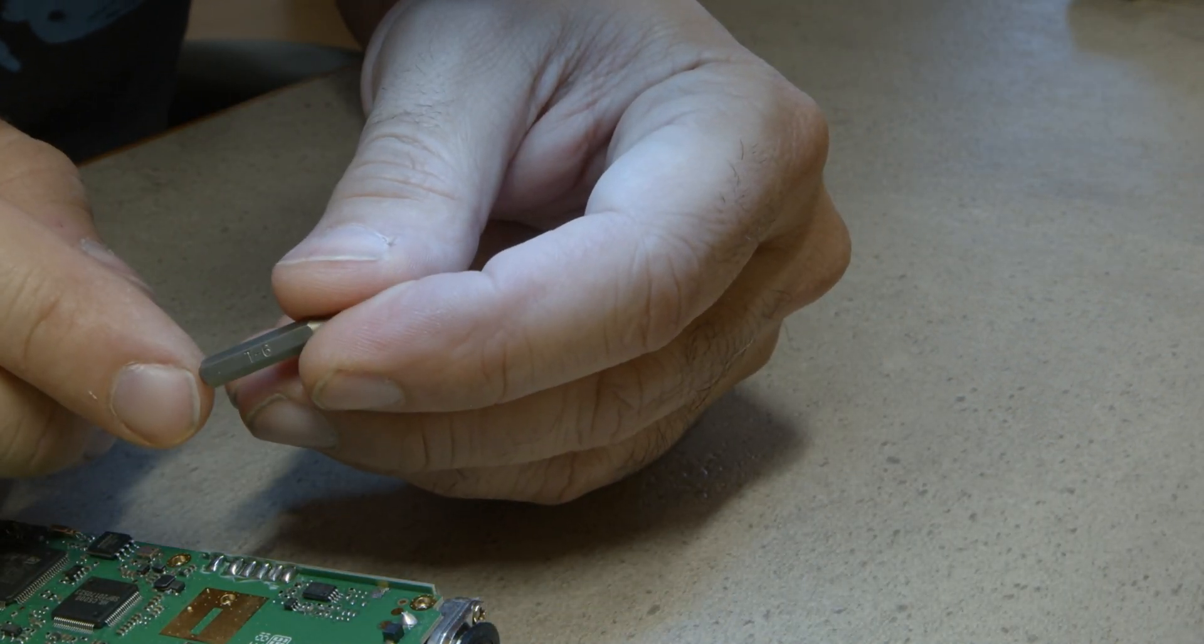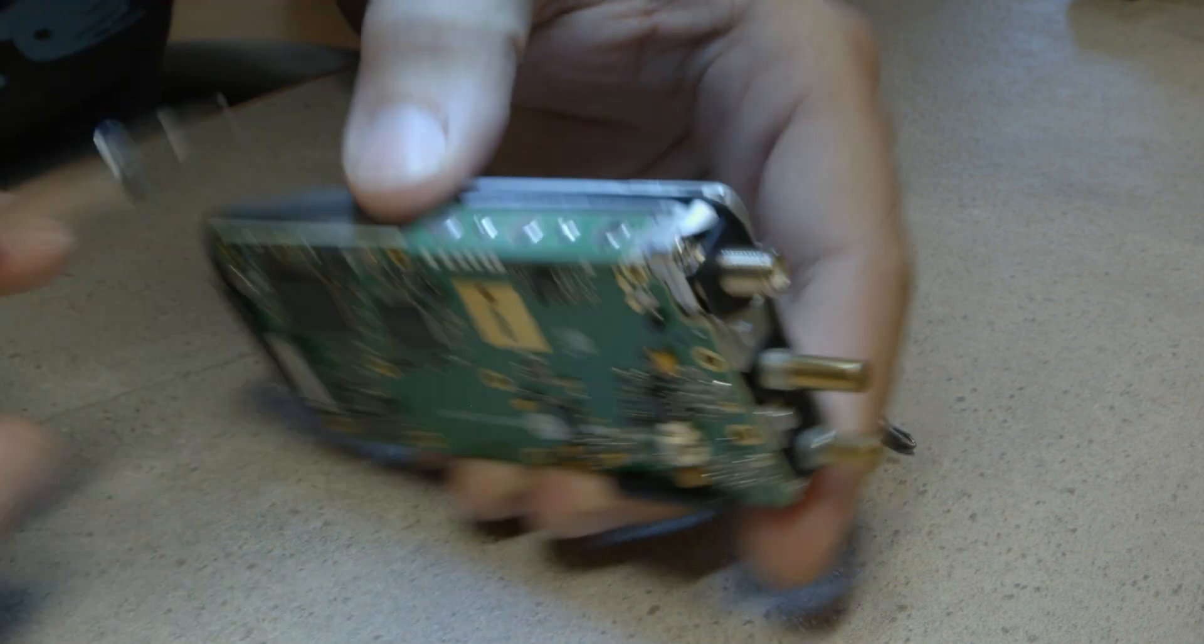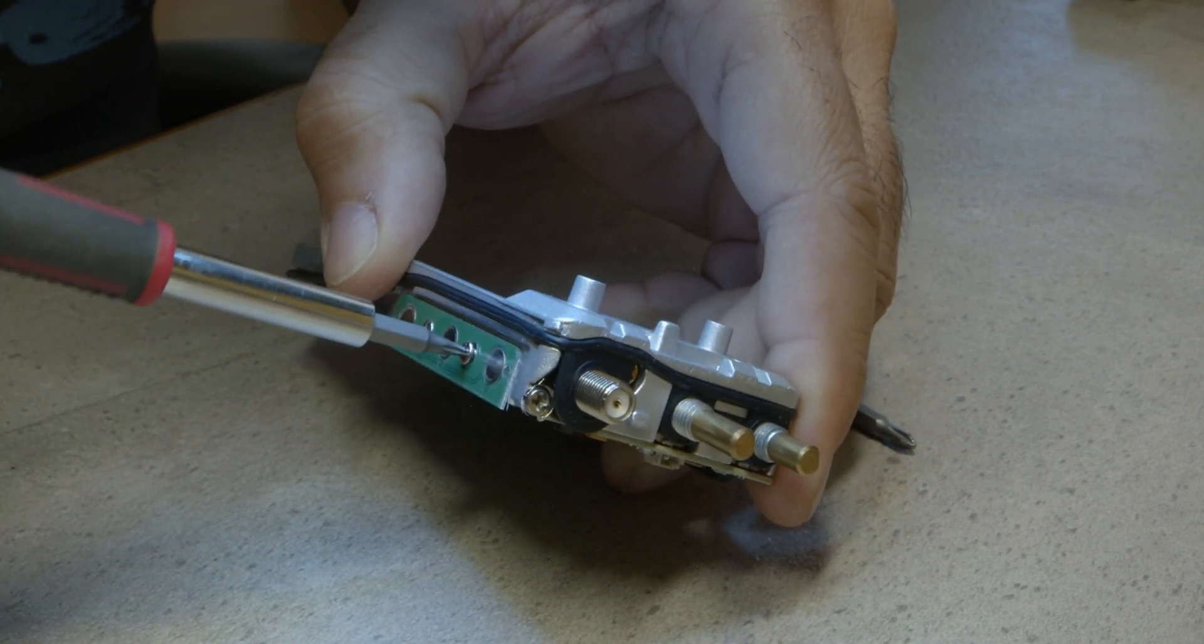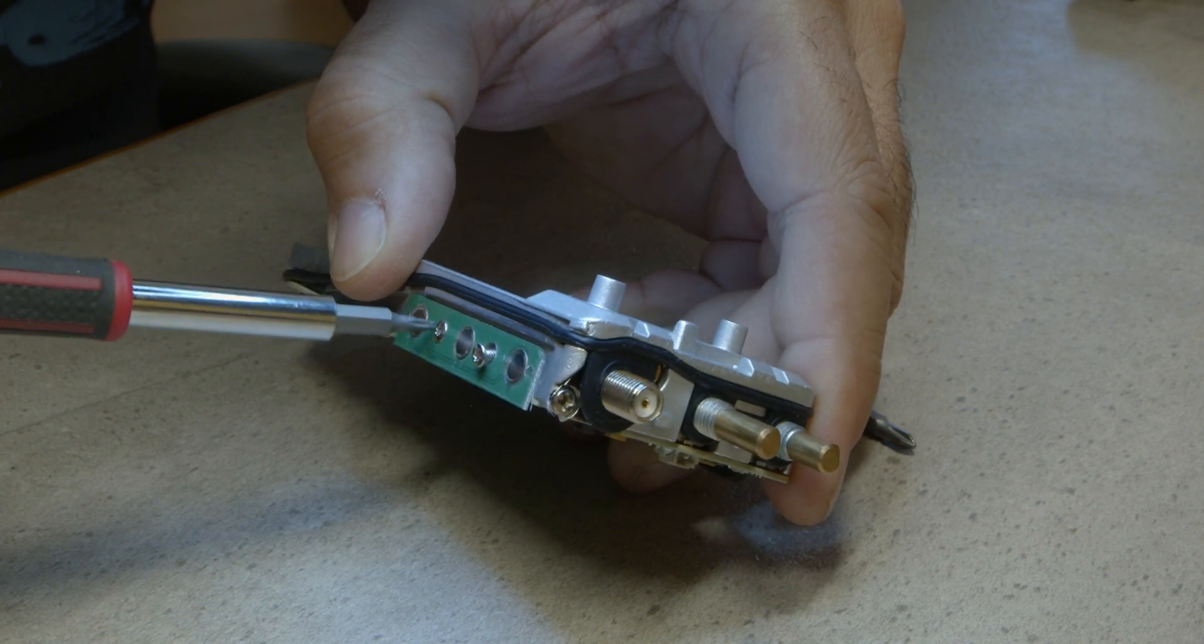Next, we remove the two T6 Torx screws holding in the side buttons. At this point, even though I didn't do it, I recommend gently removing the gasket. It gets in the way later.